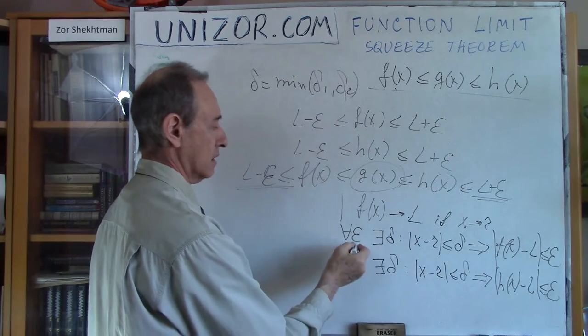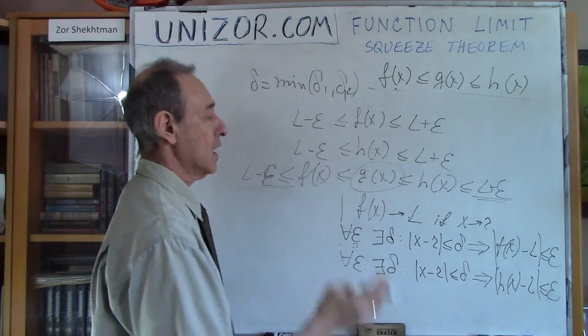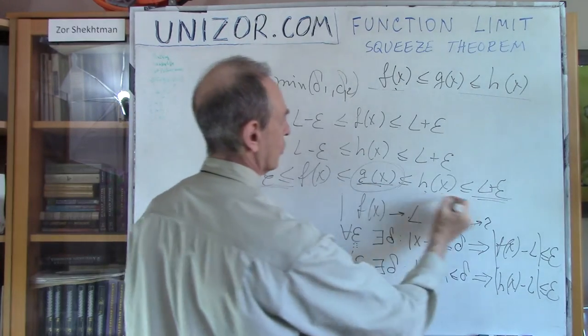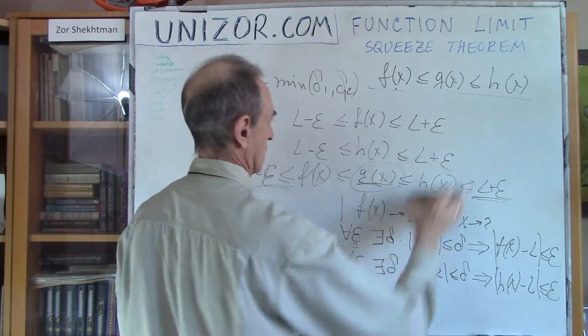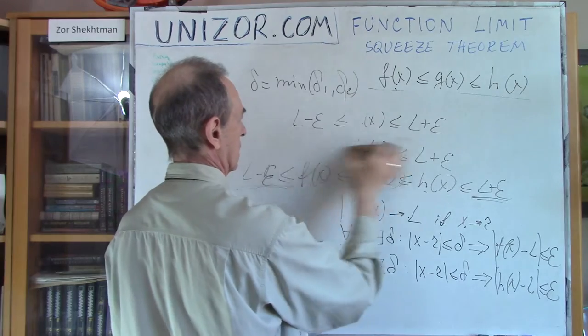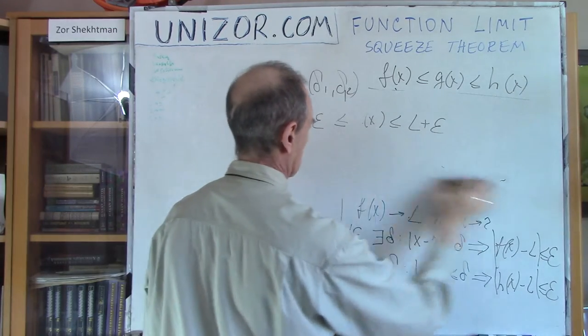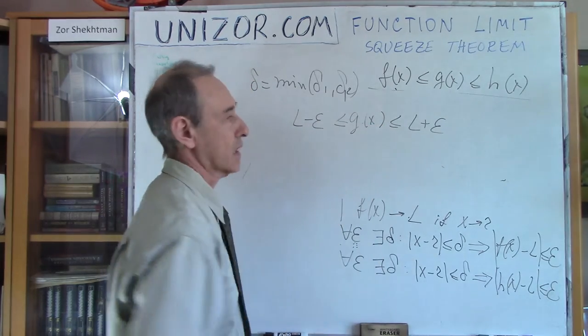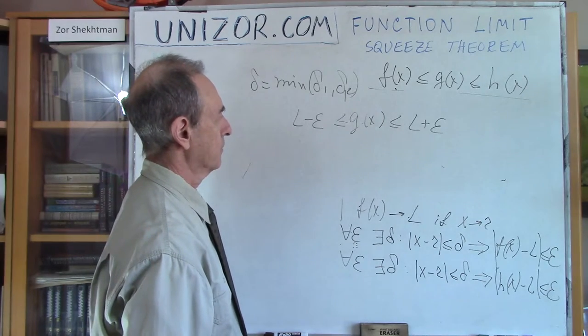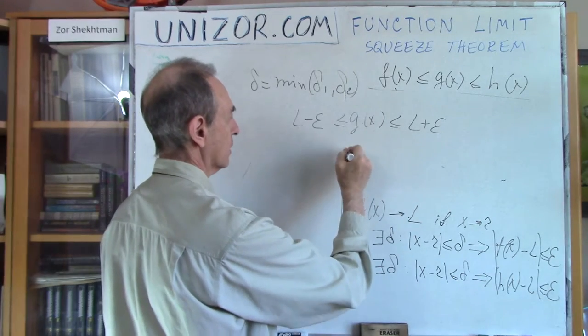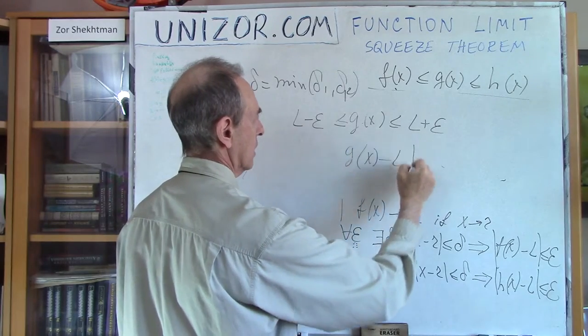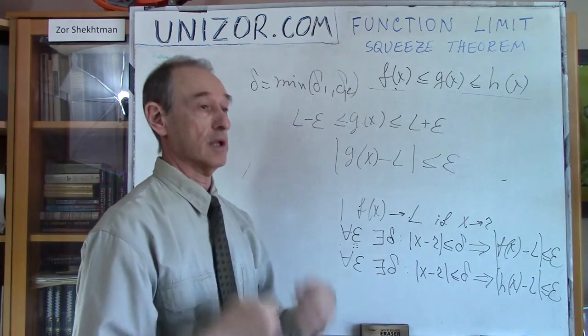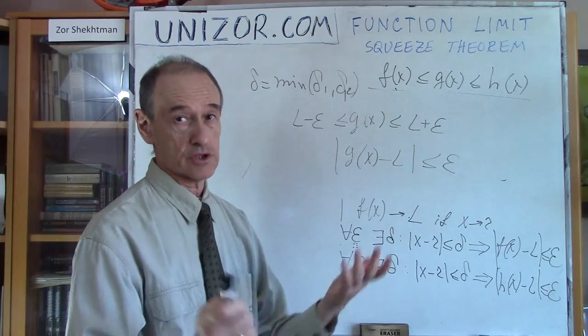So for this epsilon, whatever epsilon we can choose, however small, we can always find some delta that this is true. We have found this delta that g of x is satisfying this inequality, which is absolutely equivalent to the fact that g of x minus l less than epsilon, which means g of x is within epsilon neighborhood of l. So l is the limit by definition of the limits.